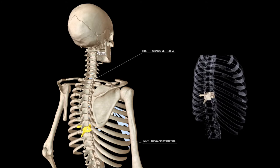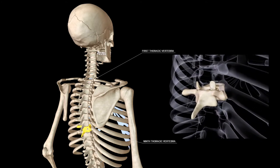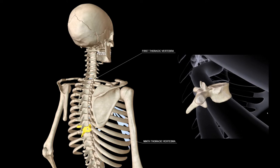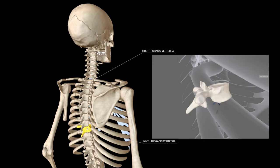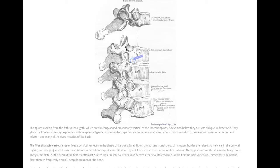The ninth thoracic vertebra may possess all the features of a typical thoracic vertebra but it often fails to articulate with the head of the tenth rib and in this case the lower facets of the body are absent. So the ninth thoracic vertebra will have superior facets that will articulate with the ninth rib but it doesn't have the inferior facet for the tenth rib. We can see that there is slight indentation on the body but the facet for the tenth rib will be found on the tenth thoracic vertebra.